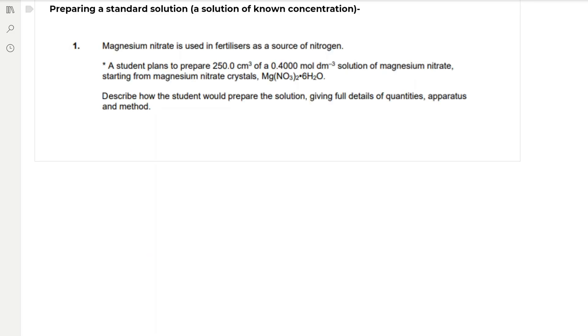Preparing a standard solution, which is a solution of known concentration. We need to do this in order to accurately get solutions of a precise concentration to use in our titrations, because otherwise our titrations won't be accurate. Magnesium nitrate is used in fertilisers as a source of nitrogen. A student plans to prepare 250 centimetres cubed of a 0.4 mole per decimetre cubed solution of magnesium nitrate, starting from magnesium nitrate crystals, which are Mg(NO3)2 with six H2O molecules. Describe how the student would prepare the solution, giving full details of quantities, apparatus and methods.